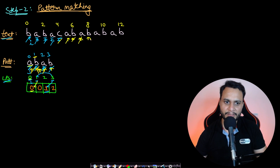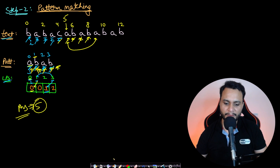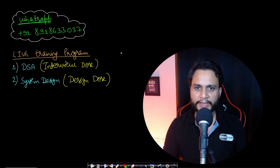Whenever j goes out of bounds, the entire pattern has been found. The starting position equals the current i position minus the length of the pattern, which gives us 5. So the answer is 5. The time complexity of the KMP algorithm is O(n + m).